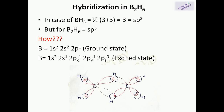Two sp3 orbitals of each boron atom form sigma bonds with terminal hydrogen atoms. Out of the four sp3 orbitals, two are used in BH terminal bond formation. One sp3 orbital has one electron and one sp3 orbital is empty. Therefore, in each banana bond formation, one boron atom contributes one electron-filled sp3 orbital, while the other boron atom provides an empty sp3 orbital, and hydrogen contributes one s orbital with one electron.